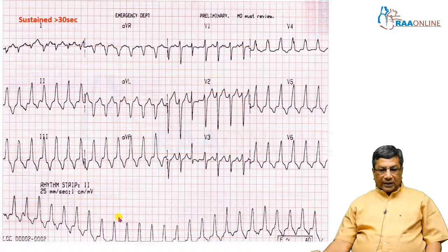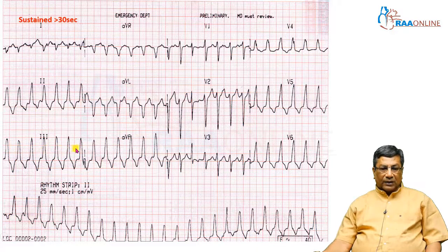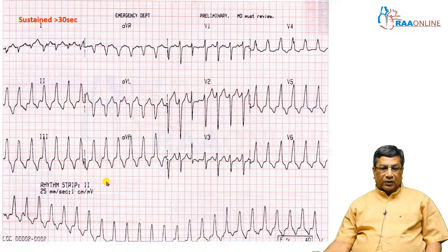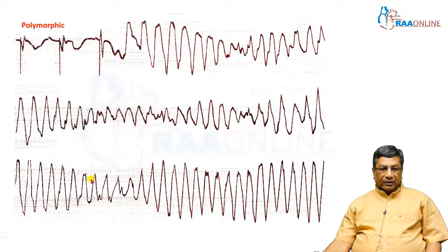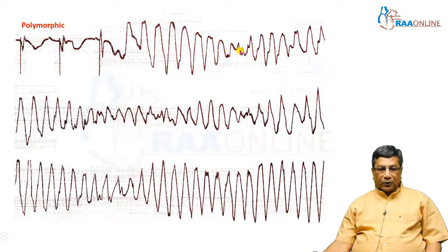In wide QRS complex tachycardia, you must check in a given lead whether all QRS complexes are of similar configuration. Look at lead 3 here — all QRS complexes are similar, so it is a monomorphic wide QRS complex tachycardia, fired from a single ventricular ectopic pacemaker. Whereas in this wide QRS complex tachycardia, each QRS complex is different in height, direction, width, notches, and amplitude — this is a polymorphic wide QRS complex tachycardia, most often torsades de pointes.